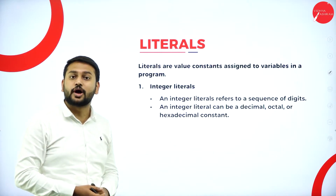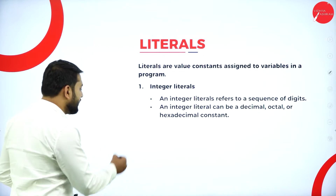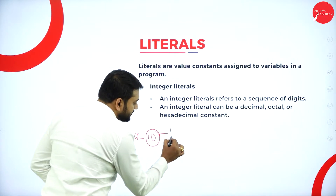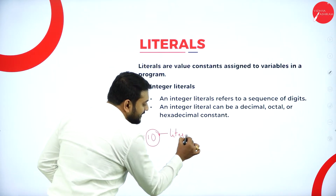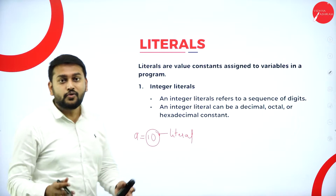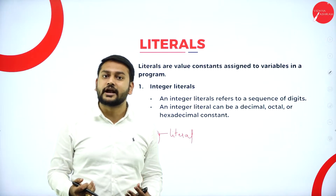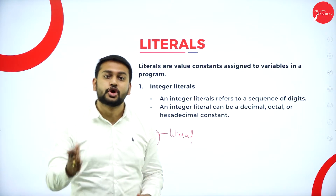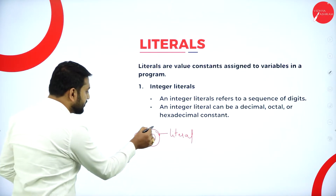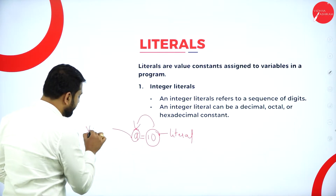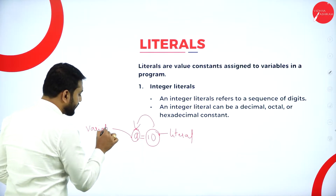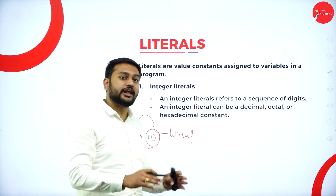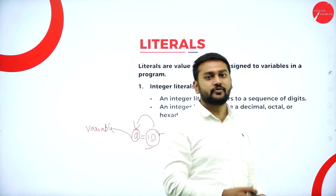Say for example if I write a = 10, the value 10 is what I will call a literal. Now it's time to understand the different types of literals — that's the different types of values which I'm going to store in a variable. So what are the different types of literals that we have?